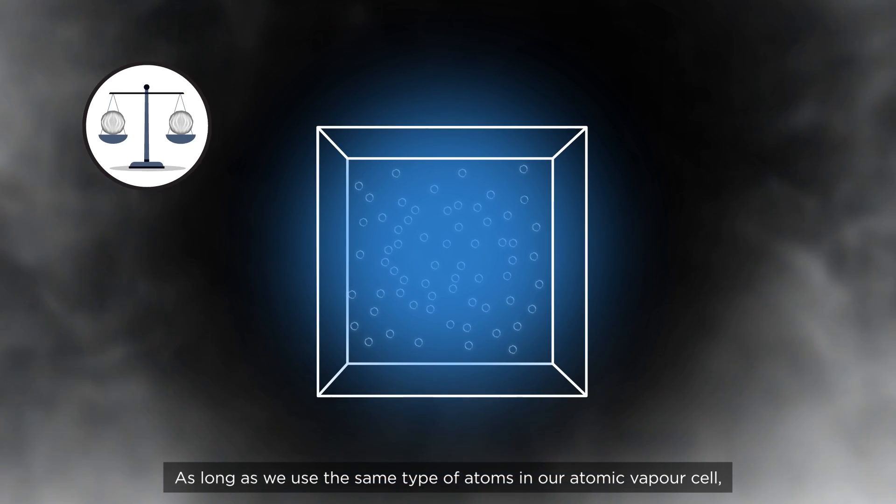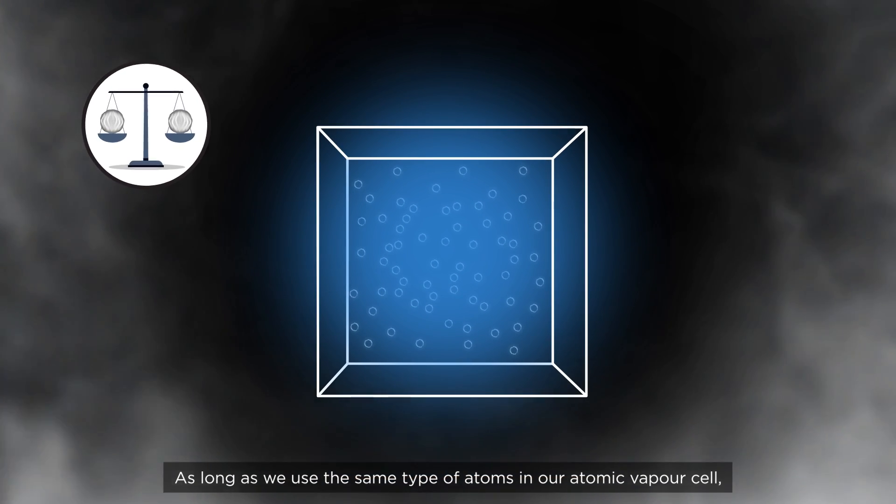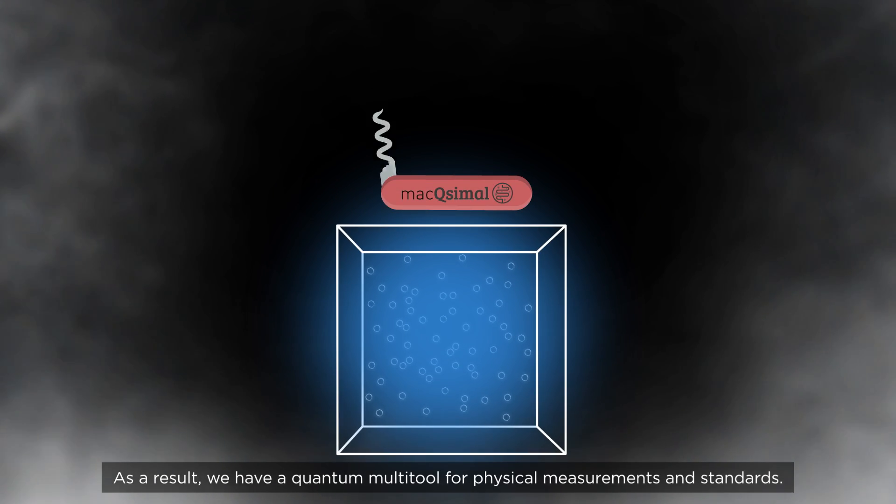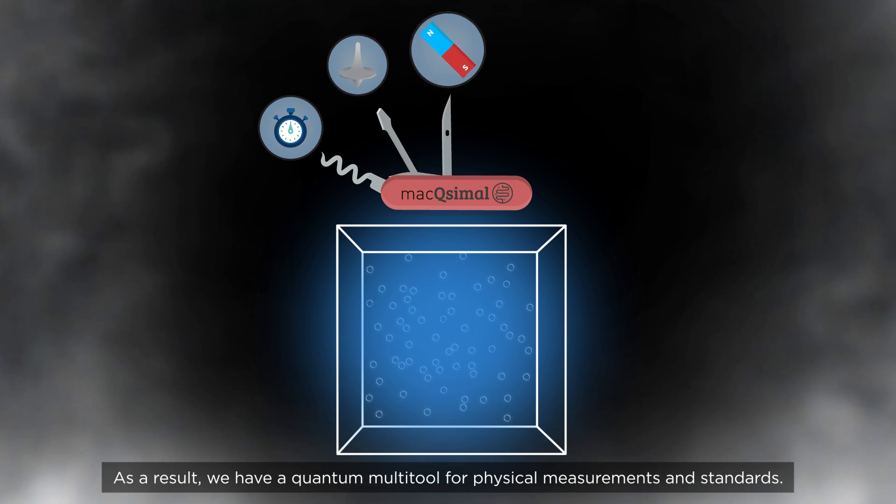As long as we use the same type of atoms in our atomic vapor cell, there is no need for calibration or fine tuning. As a result, we have a quantum multi-tool for physical measurements and standards.